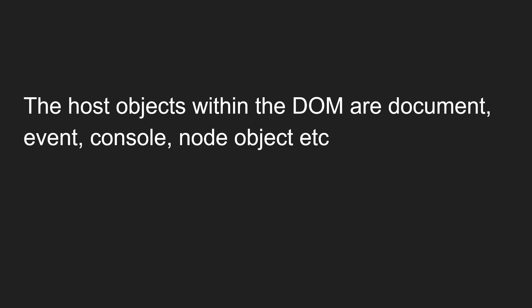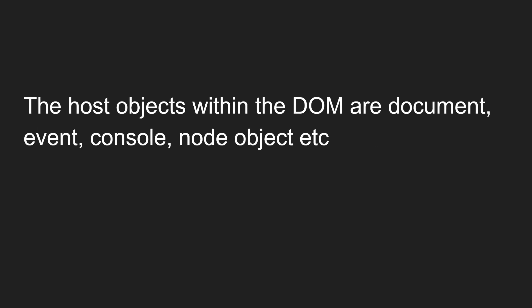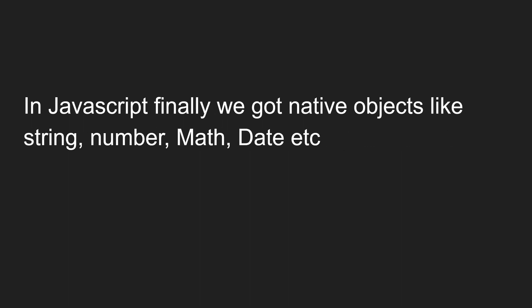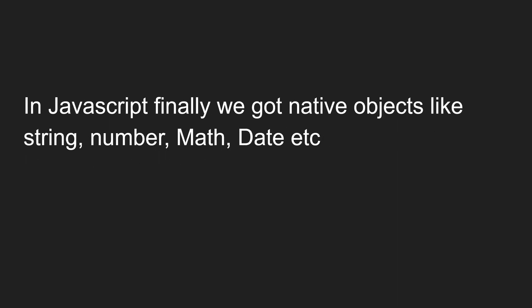In the DOM, the available host objects are document, event, console, and node. When it comes to the BOM (Browser Object Model), you have host objects like screen, history, frames, navigator, etc. In JavaScript itself, the native objects include String, Math, Number, Date, etc. Our browser uses the DOM and BOM objects and grants access to them automatically — that is why we call these objects host objects.